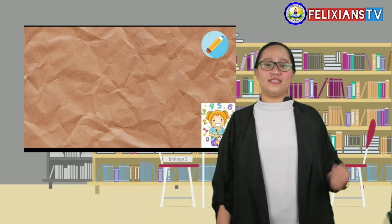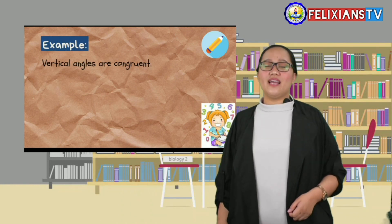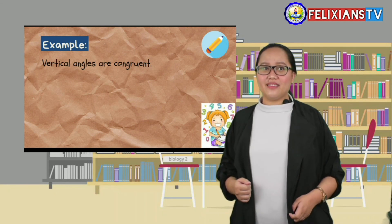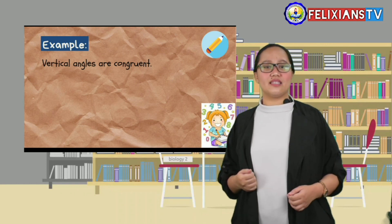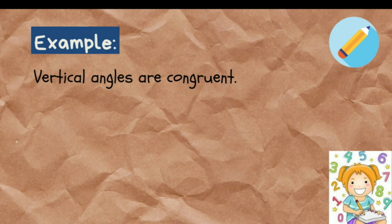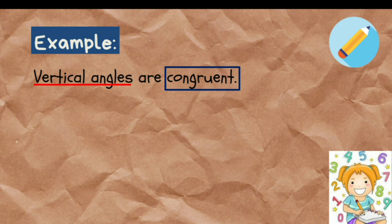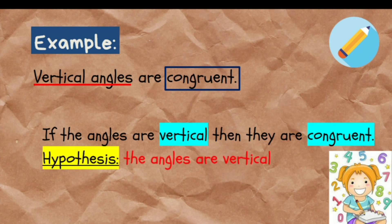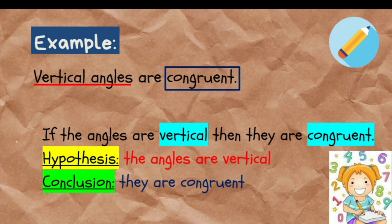Let's have more examples. The given statement is: vertical angles are congruent. To determine the hypothesis and conclusion, we identify the subject and predicate. We are talking about vertical angles being congruent, so the if-then statement is: if the angles are vertical, then they are congruent. The hypothesis is 'the angles are vertical,' and the conclusion is 'they are congruent.' It's easy, right?